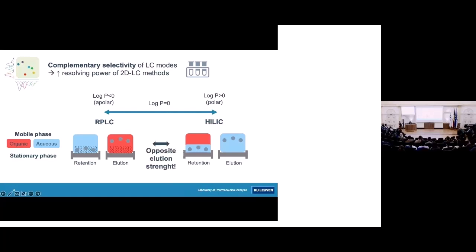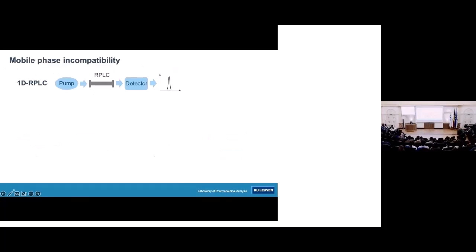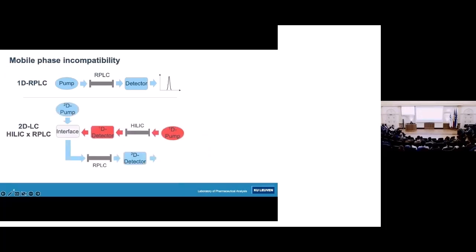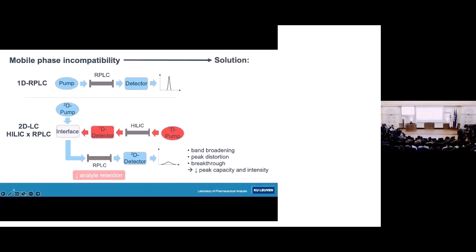Both these phases have opposite elution strength, and that is why when we combine them into 2D LC methods we have this problem of mobile phase incompatibility. A fraction from the first dimension often has a large volume and a high percentage of organic. When these fractions are sent to the second dimension, the analytes are less retained on the second dimension column, causing band broadening, peak distortion, or even breakthrough — resulting in reduced peak capacity and peak intensities.